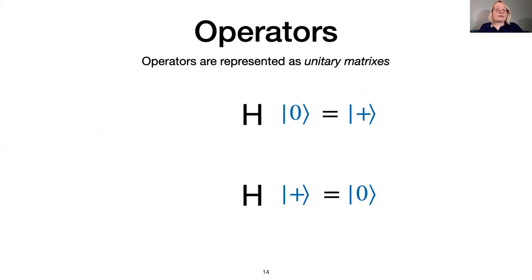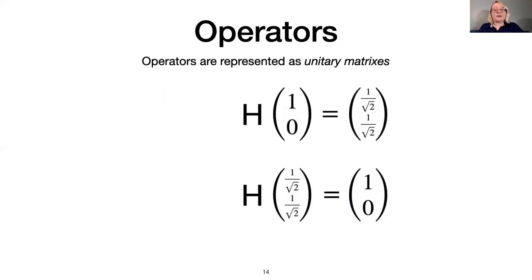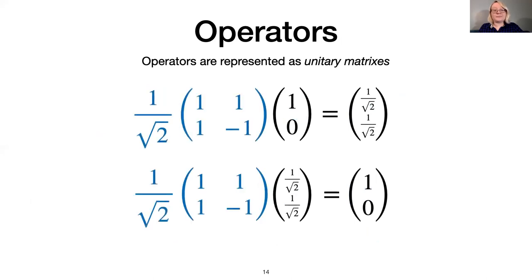Recall that the 0 and plus states are two-dimensional vectors, which suggests that the Hadamard operation is a 2x2 matrix. In fact, all unitary operations can be described by unitary matrices. A unitary matrix is a complex square matrix with the property that its conjugate transpose is also its inverse. This property ensures that unitary matrices preserve the unit length of input states.